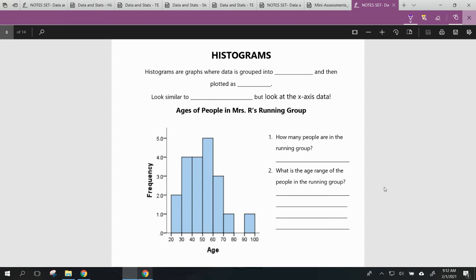Histograms are graphs where data is grouped into ranges and then plotted as bars. They look similar to bar graphs.